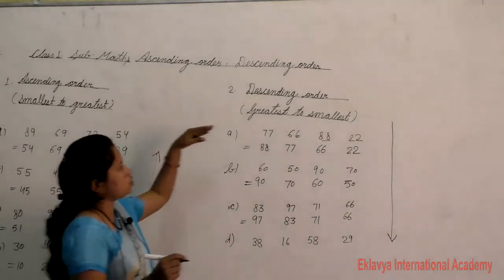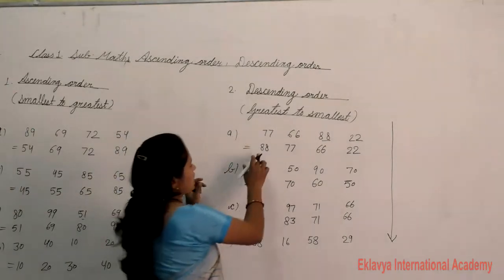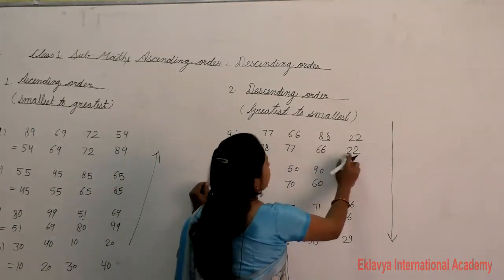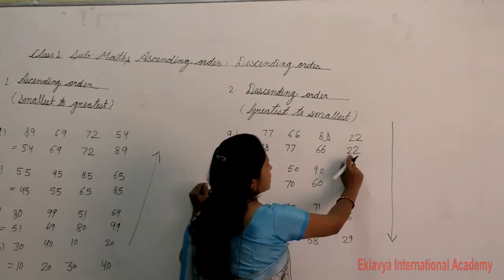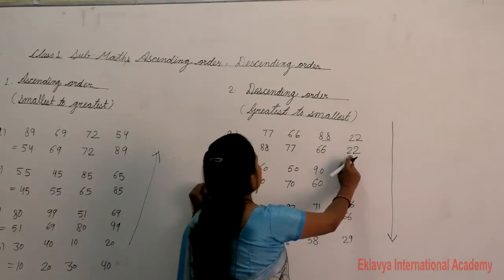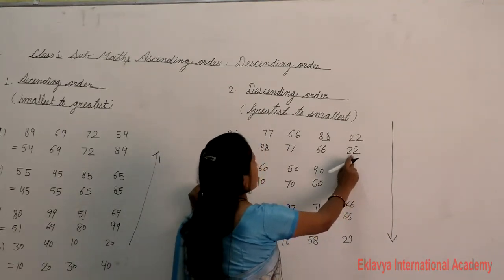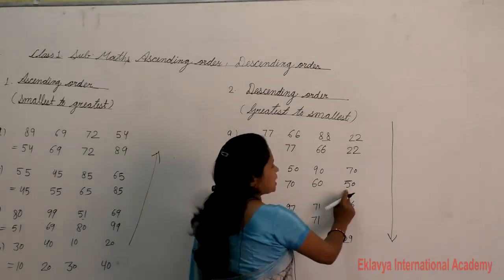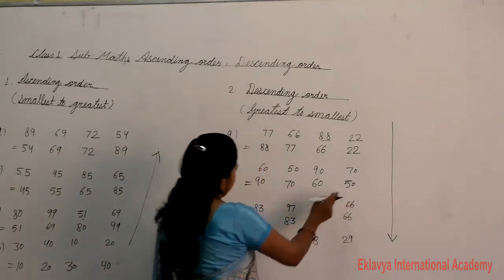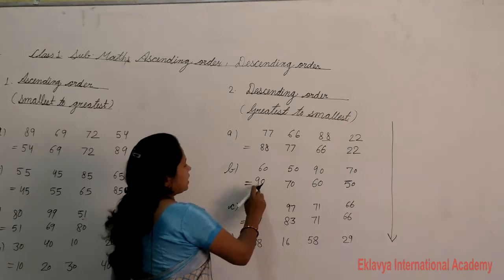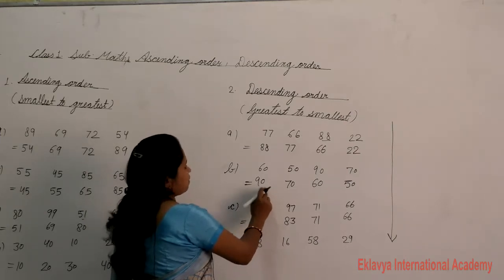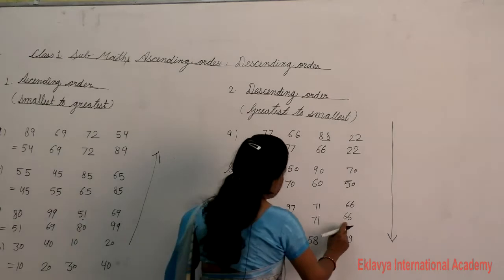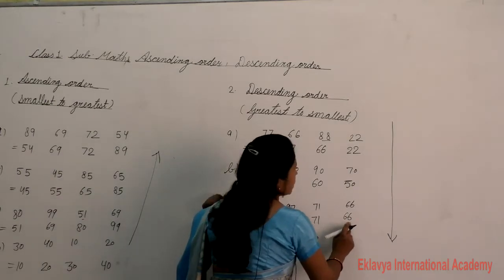So remember: greatest to smallest. In our examples, 88 is bigger and 22 is smallest. 90 is bigger and 50 is smallest. 97 is greatest and 66 is smallest.